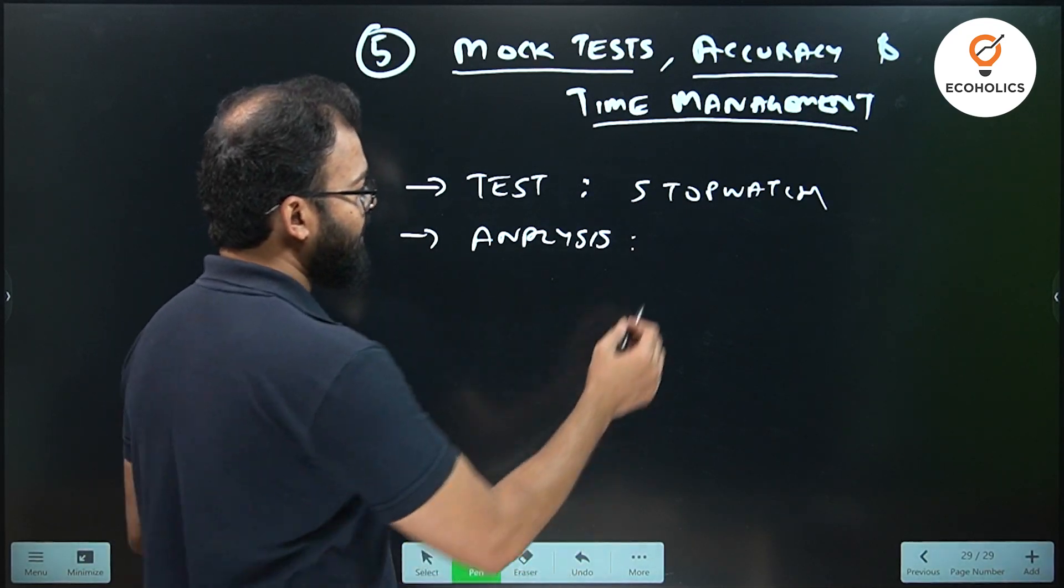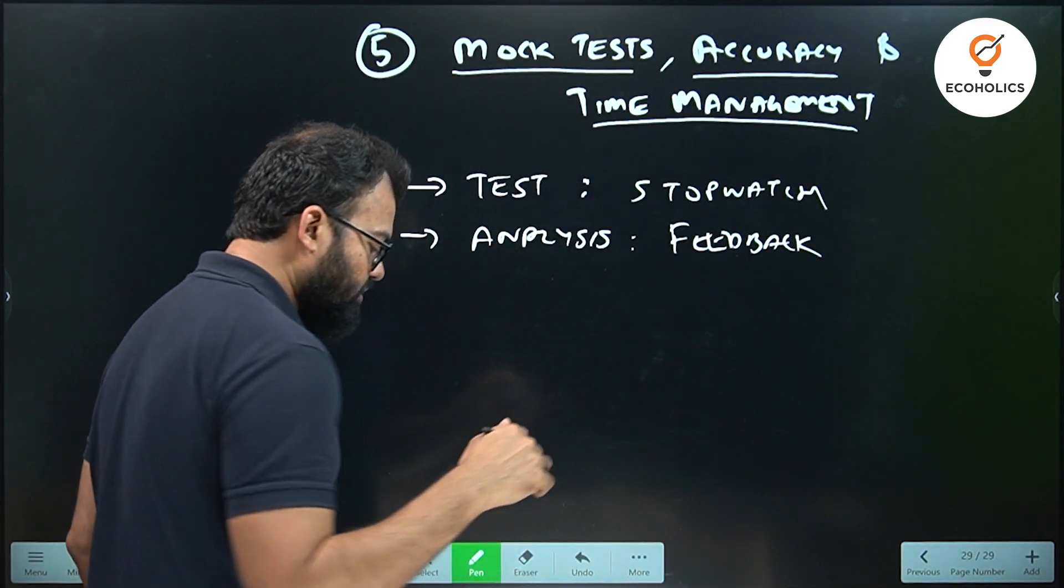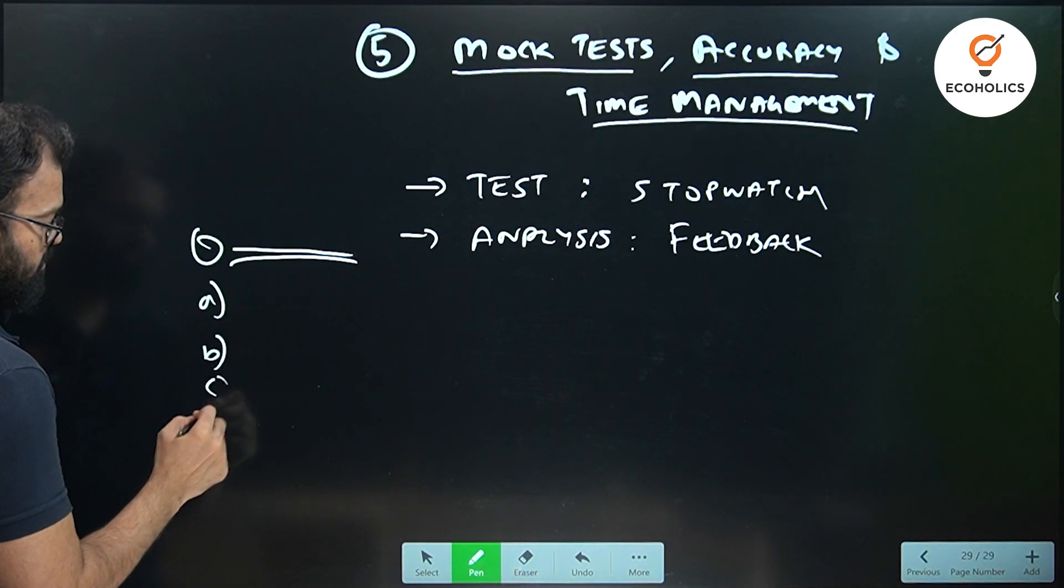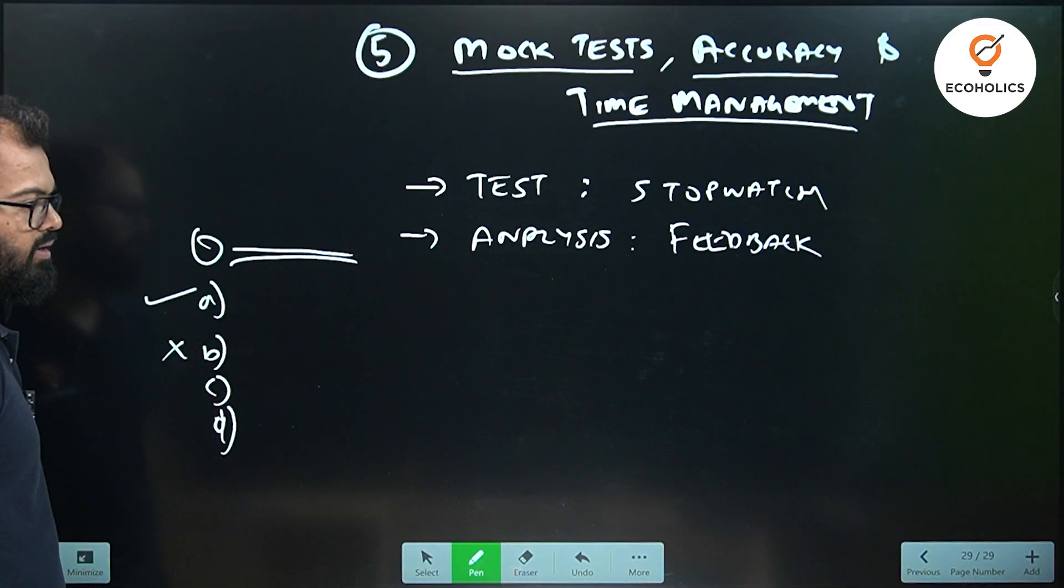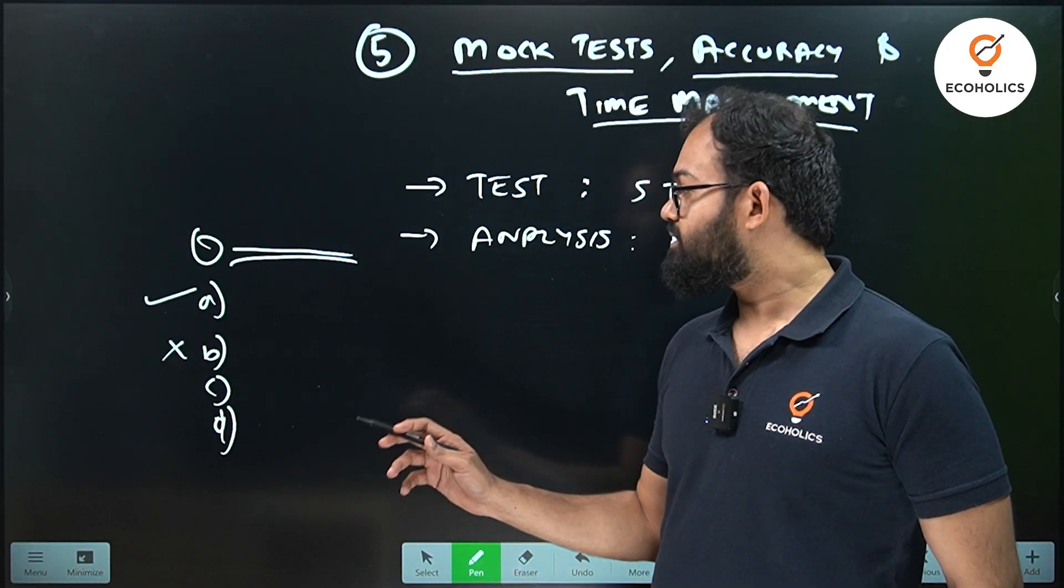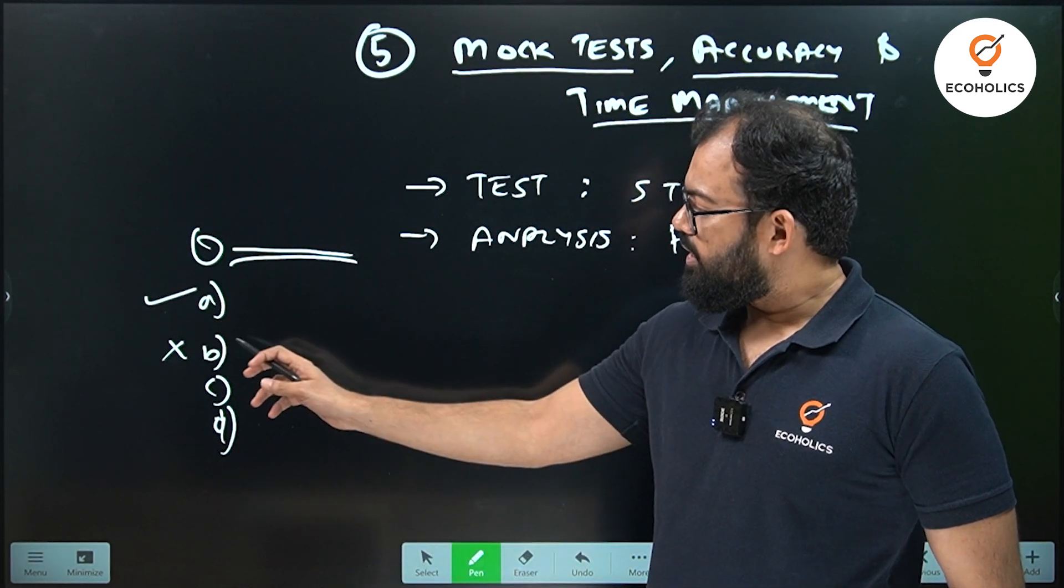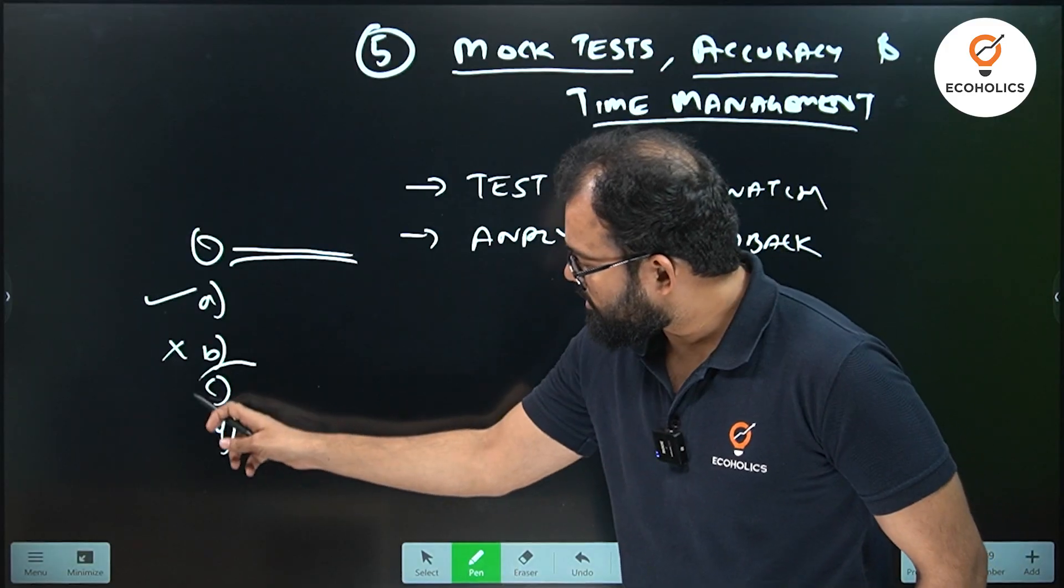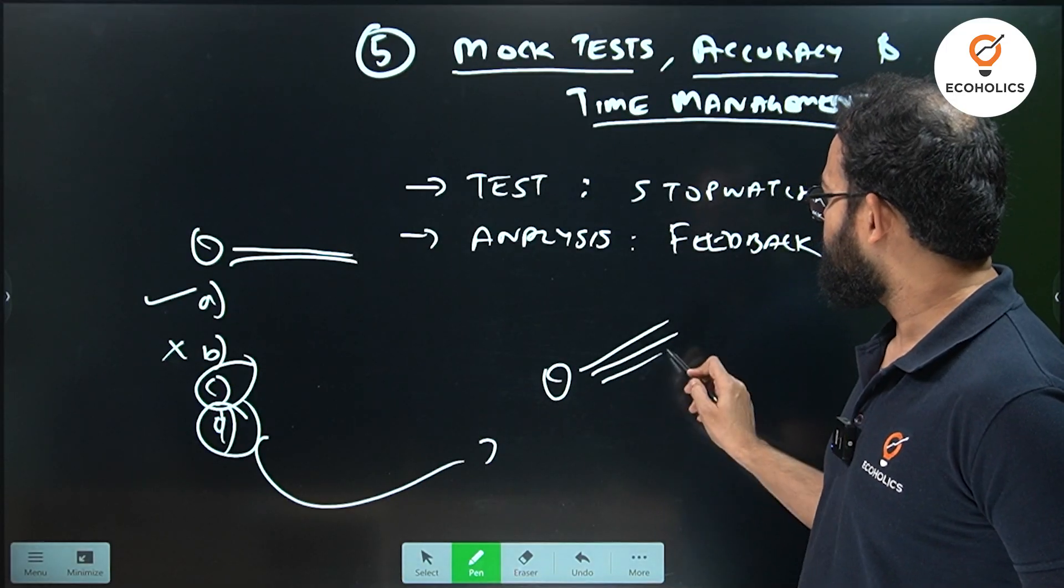So tests are there. Then analysis—generally people give tests and they do not analyze. That is what we call feedback. Feedback is important. For example, one question is there with four options. Suppose you have done a mistake here. The answer was this, but you have selected option B, and the answer went wrong. Now here you need to understand that point A and point B—you marked point A and the correct answer was not B that you marked. Option C and option D can become an idea for the next question, and that is why I call analysis very vital.